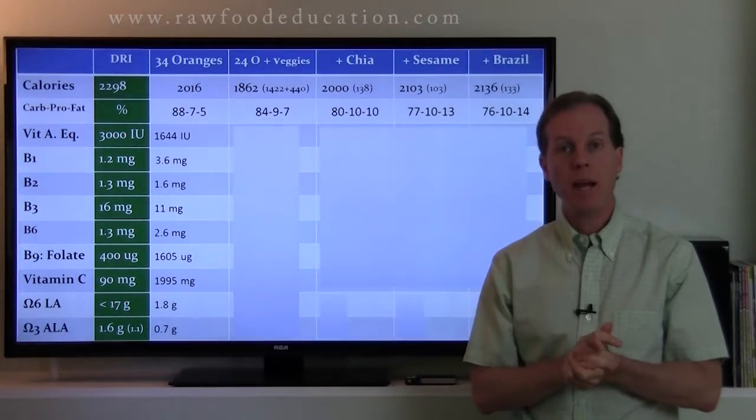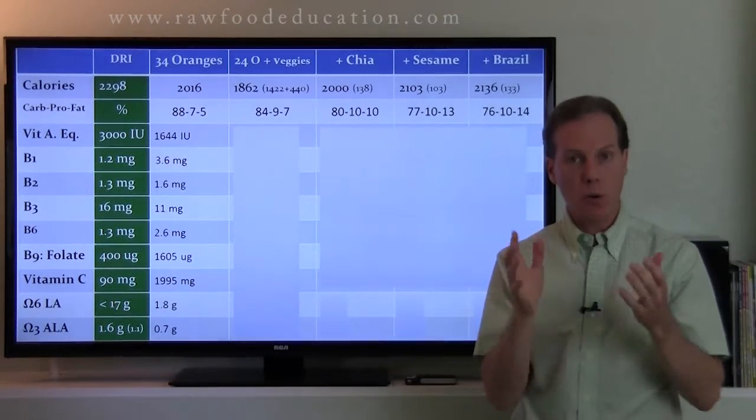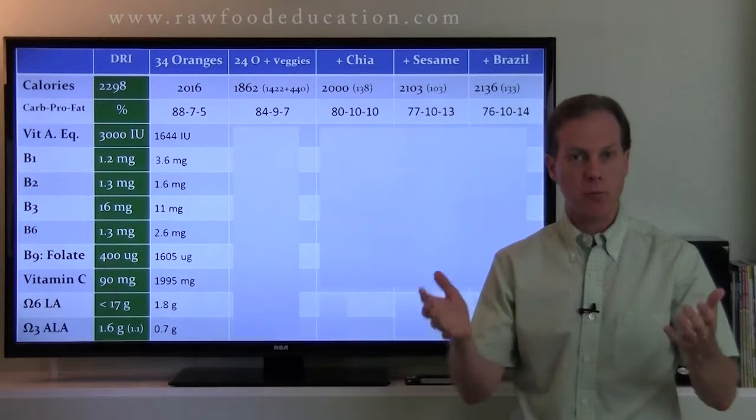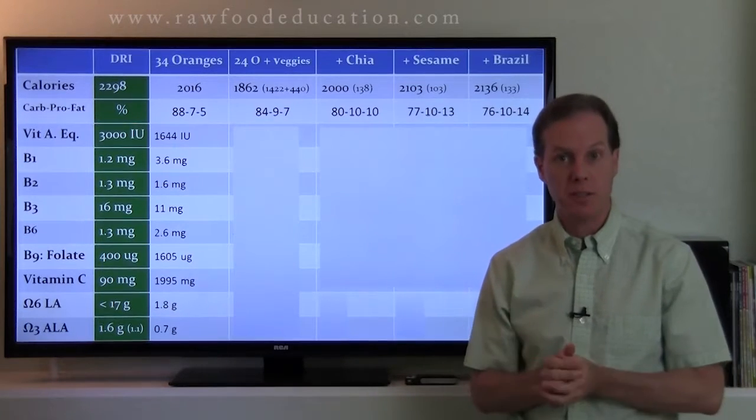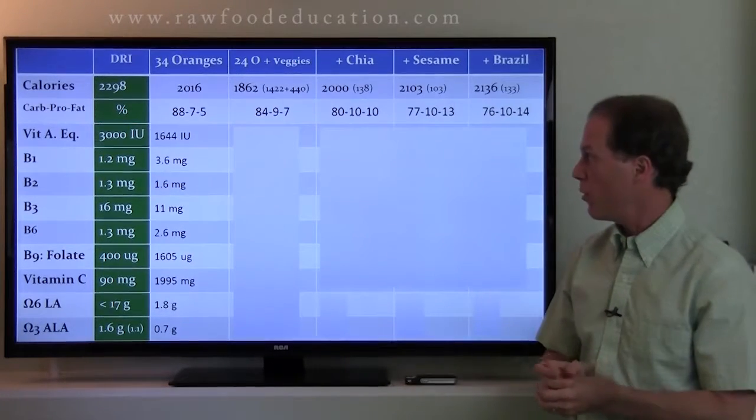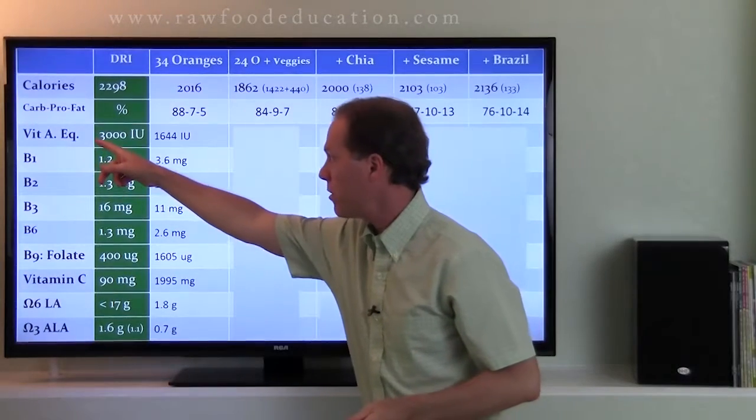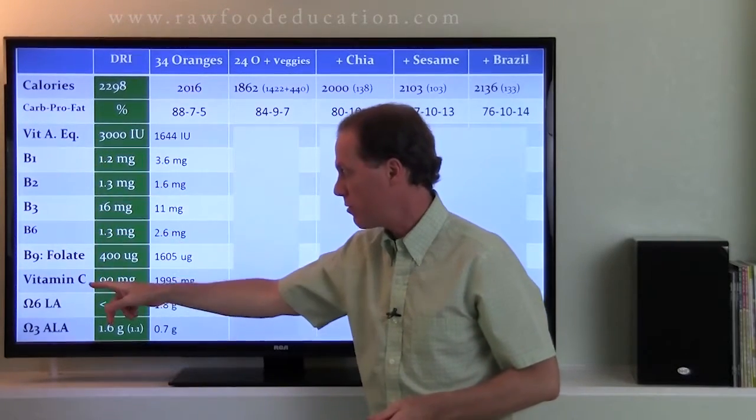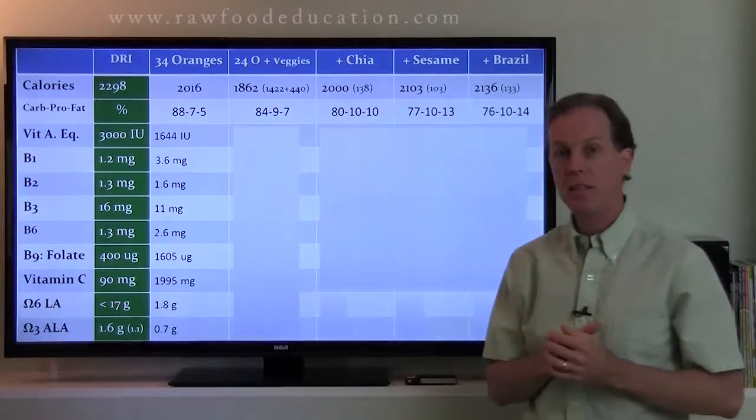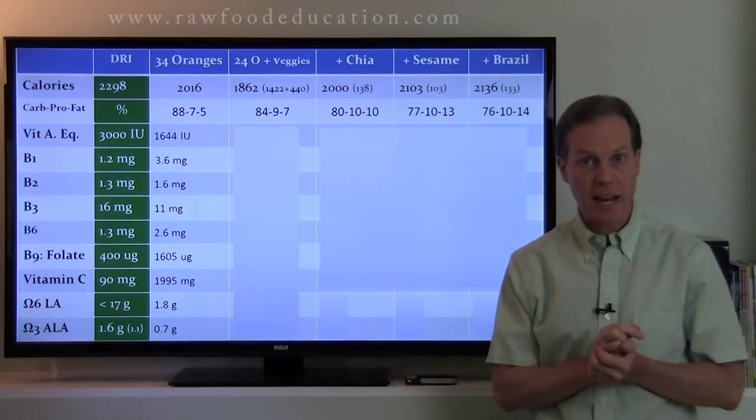Hi everybody and welcome back to part two of our orange-based diet raw food nutrient analysis. In today's episode we are going to take a look at vitamin A, various B vitamins, vitamin C, and the essential fatty acids.